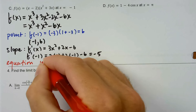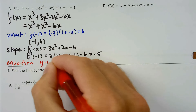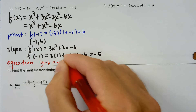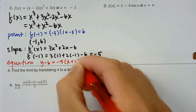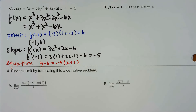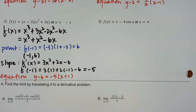So the equation is y minus 6 equals negative 5 times x minus negative 1. And really, at this point, there is no such thing as too many of these practice problems — it's a very common thing to do in AP calculus.